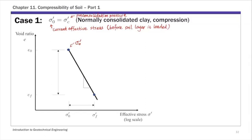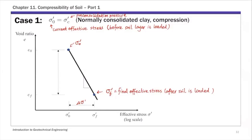When loading a normally consolidated soil layer, the soil follows the initial loading portion — that steeper slope. You increase effective stress by putting sandy fill or a structure on top. The effective stress in the soil layer increases and we call the final value sigma_F prime — the final effective stress after the loading change. The change in effective stress is delta sigma prime, representing how much load you put on top. The slope of the virgin compression curve is CC, the compression index.